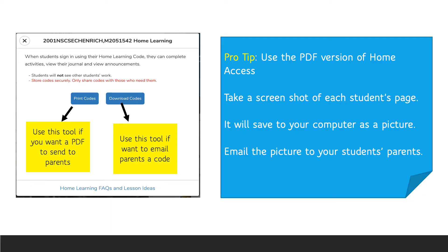For home access codes, when you click on the arrow you're going to get two options: to print codes or to download codes. The print codes option will give you a PDF that you can send to parents. The download codes option comes in an Excel format — it's not pretty and it doesn't provide directions to parents. So this is my pro tip: use the PDF version of home access.